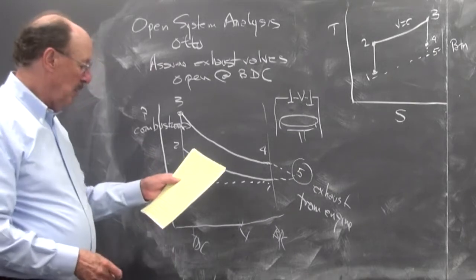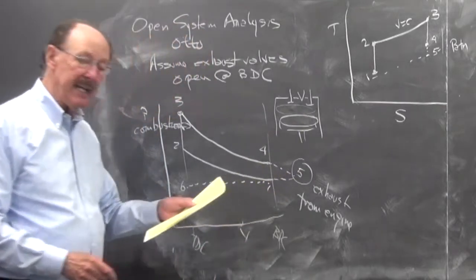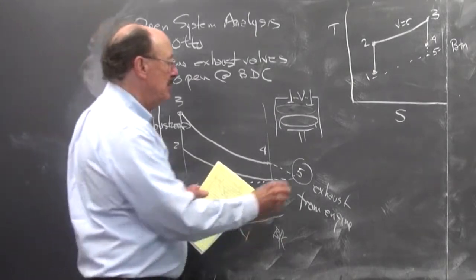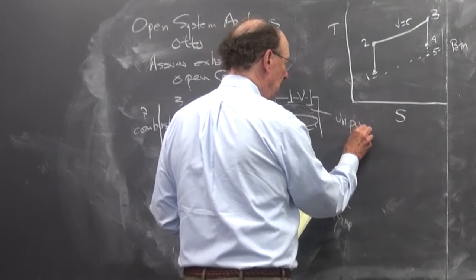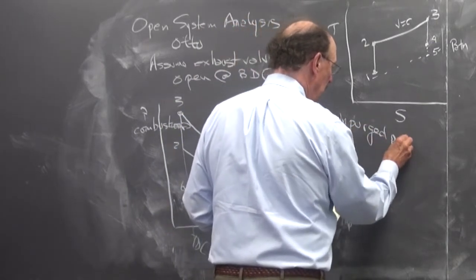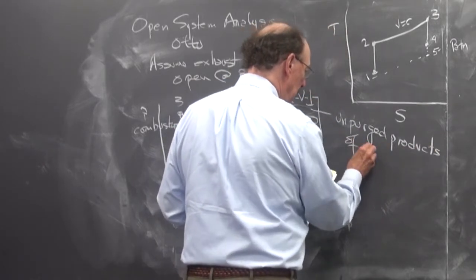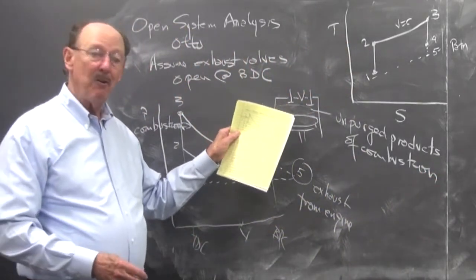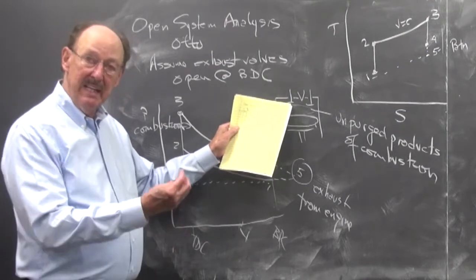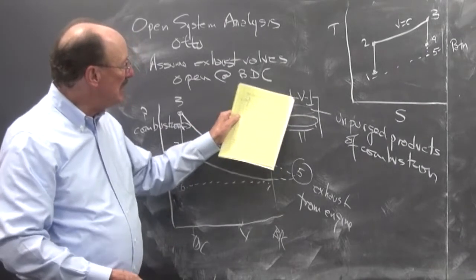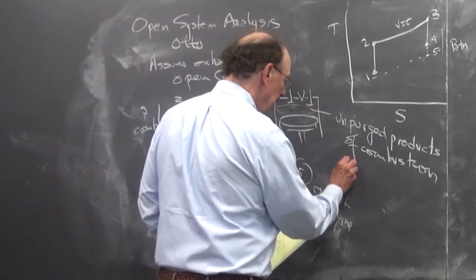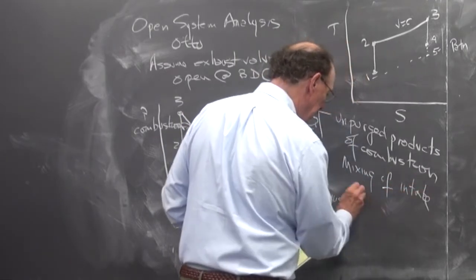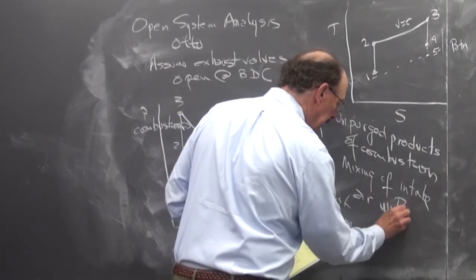So we're going to pull in here. What we have at this point, so when we look at an actual engine, the exhaust is pushed out, we're going to have the air coming in, but there's some unpurged products. So what happens is not all the exhaust gets out, but the intake valve opens, and I start pulling it in, and I have mixing of the exhaust with the intake.